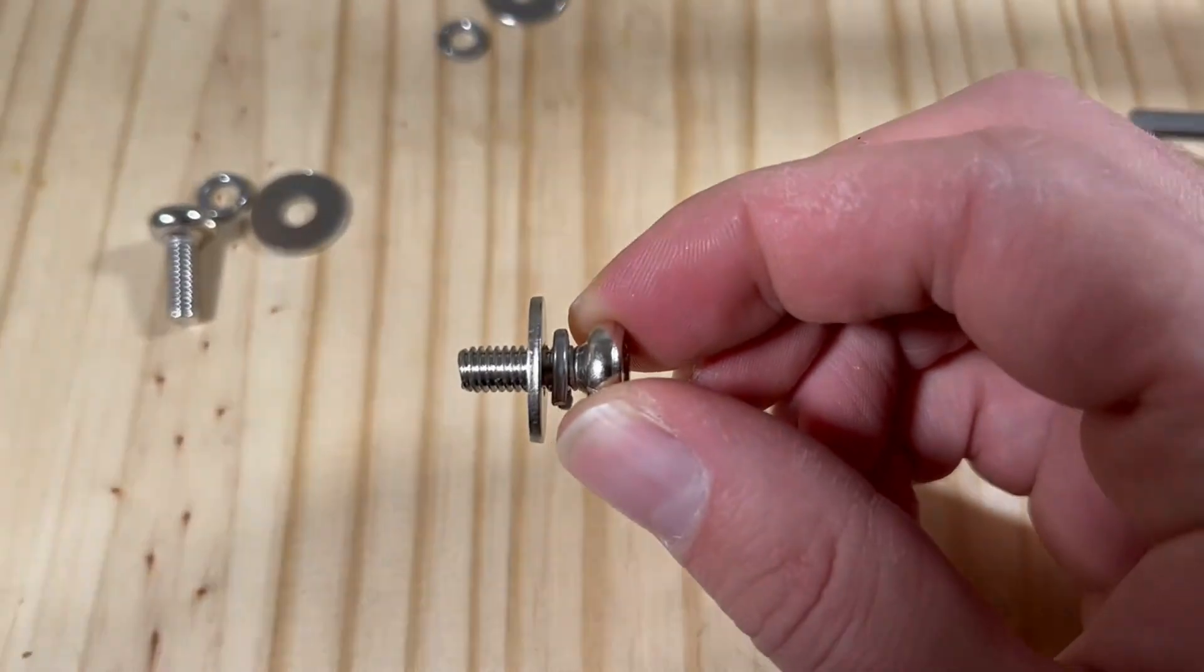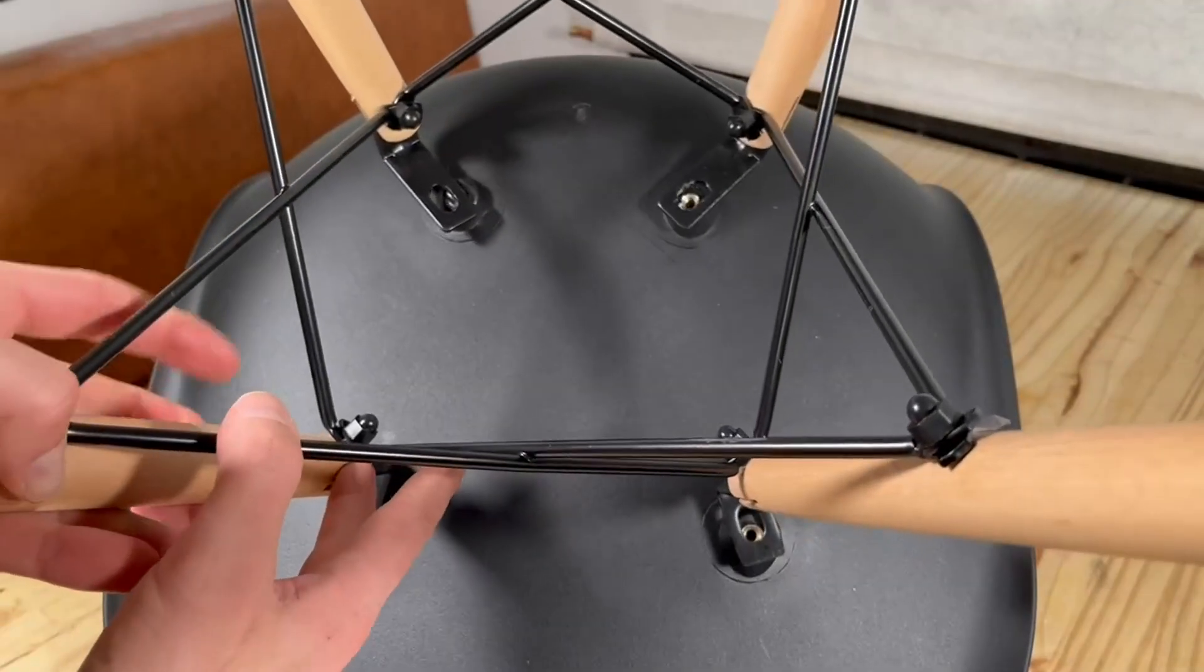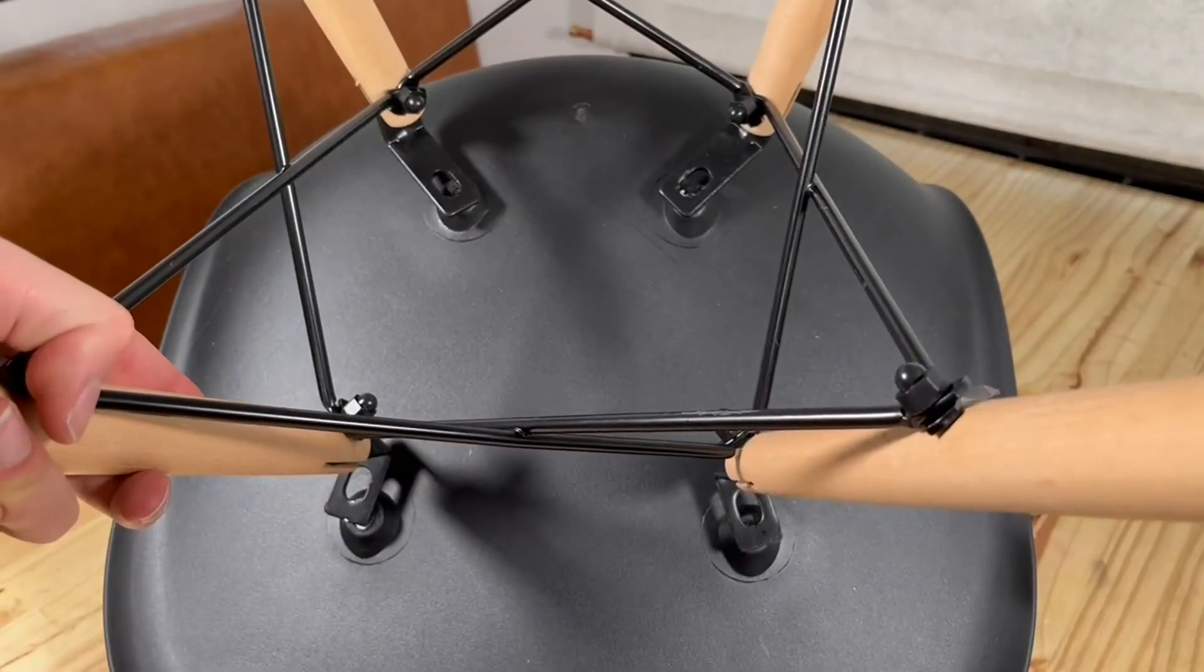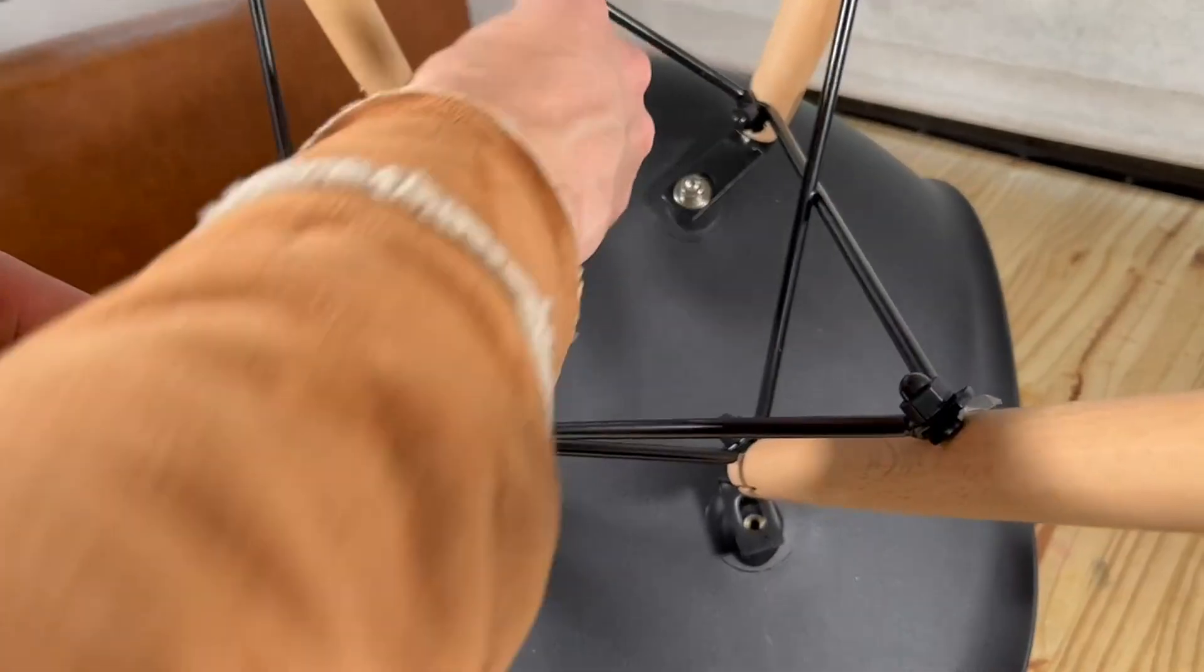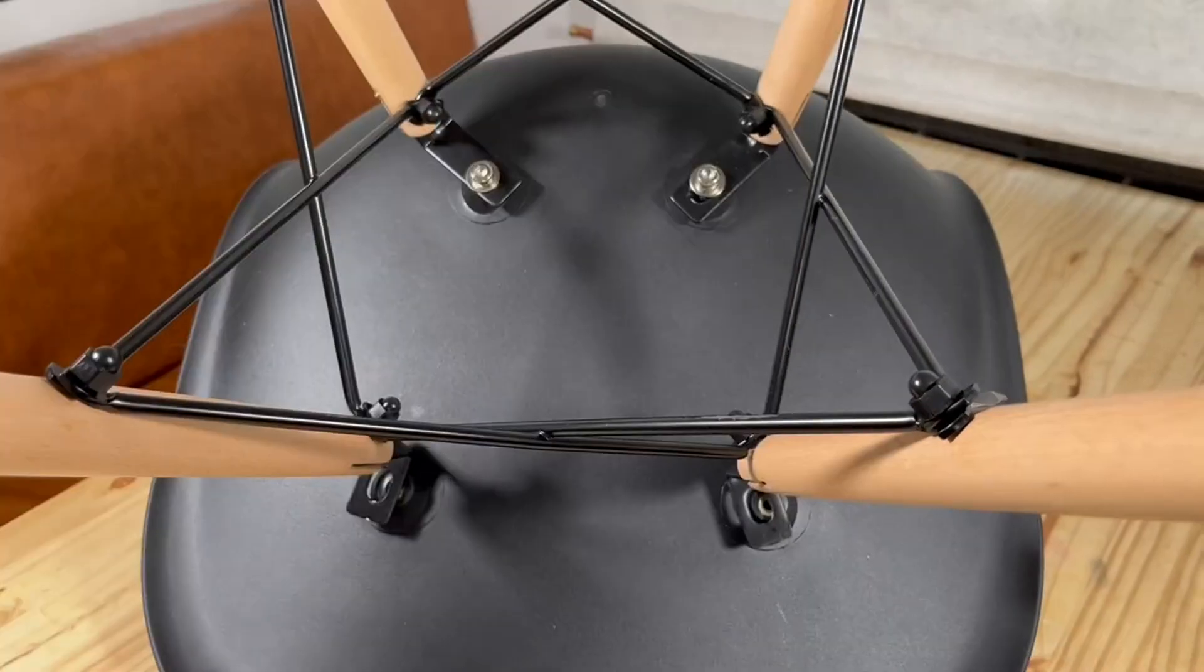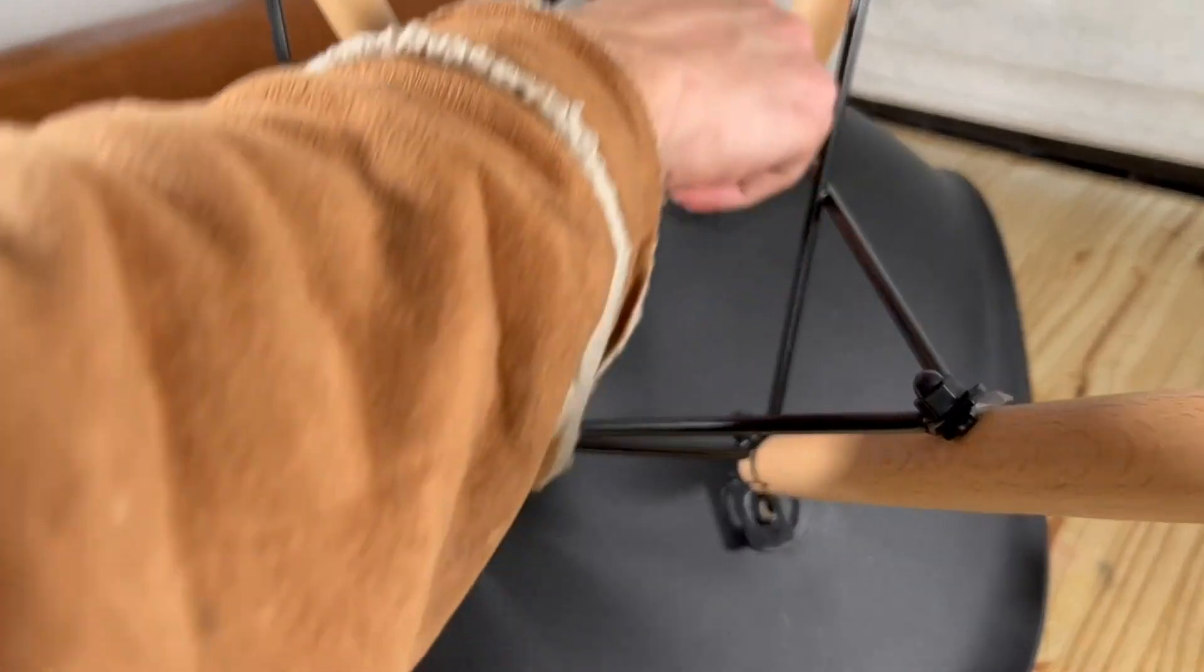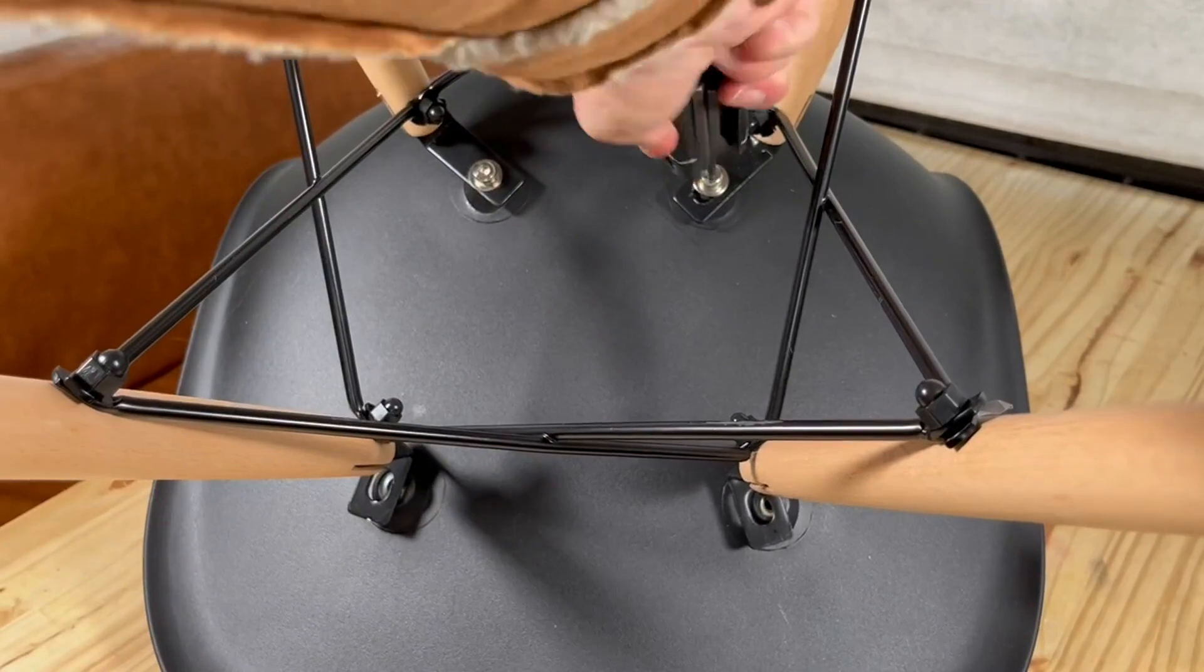I recommend putting these screws in that configuration. Simply line it up and start by tightening it with your hand. It'll get pretty tight, then just finish it off with the Allen key. That's about it - as long as you're in line, you're good to go.